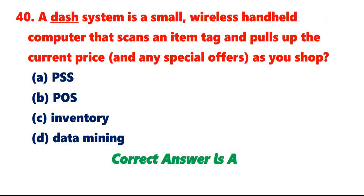Question 40: A system is a small wireless handheld computer that scans an item tag and pulls up the current price and any special offers as you shop. A. PSS. B. POS. C. Inventory. D. Data mining. Correct answer is A.